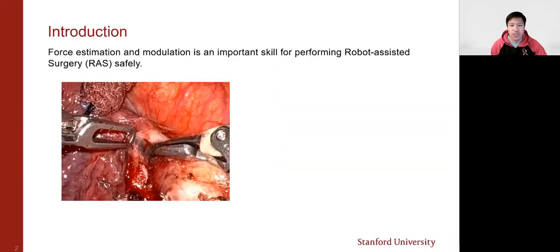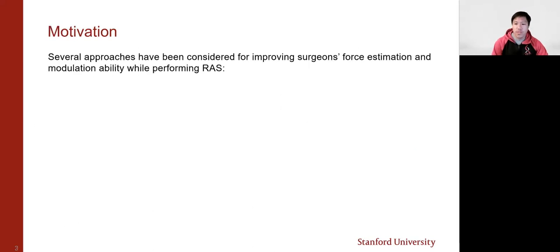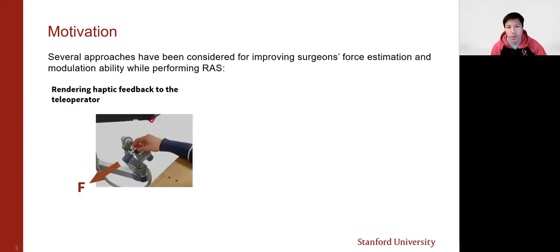Force estimation and modulation is an important skill for performing safe robot-assisted surgery. In the picture shown here, a surgeon is attempting to remove tissues surrounding a delicate blood vessel and has to apply the appropriate amount of tension and compression force so as not to cause damage to the vessel while exposing the tissue to be removed. Such maneuvers are thought to be difficult due to a lack of haptic feedback. Several approaches have been considered for improving surgeon's force estimation and modulation ability while performing robot-assisted surgery. The first and most intuitive way would be rendering haptic feedback to the teleoperator.